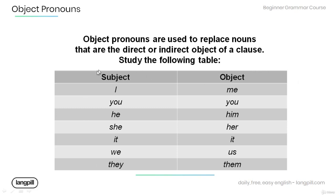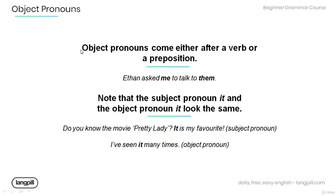When we want to use a pronoun as the subject of a sentence, we use: I, you, he, she, it, we, or they. And when we want to use a pronoun as the object of a sentence, we use: me, you, him, her, it, us, or them. As earlier stated, object pronouns come either after a verb or a preposition.